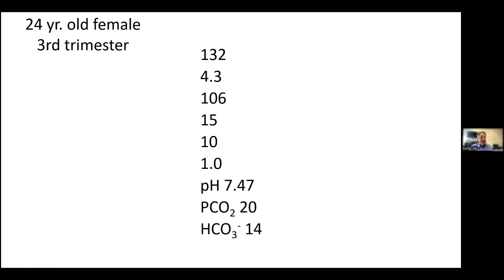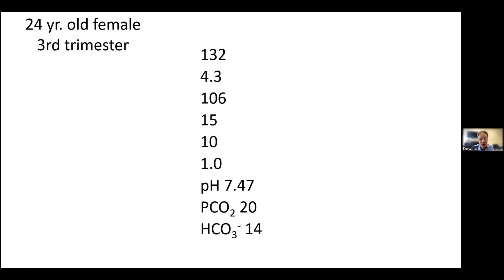Here's the last case — a 24-year-old female in the third trimester. She has a low total CO2, a bicarbonate compatible with that, and the PCO2 is also down. What are the three acid-base disorders that lower the total CO2 or bicarbonate?